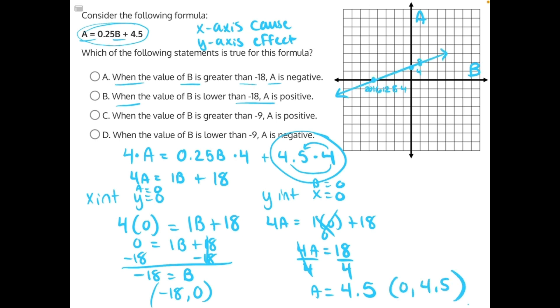Here I've plotted our two intercepts, negative 18 comma 0. I went to the left 18 up 0, then 0 comma 4.5. I went up 4.5 and to the right 0.